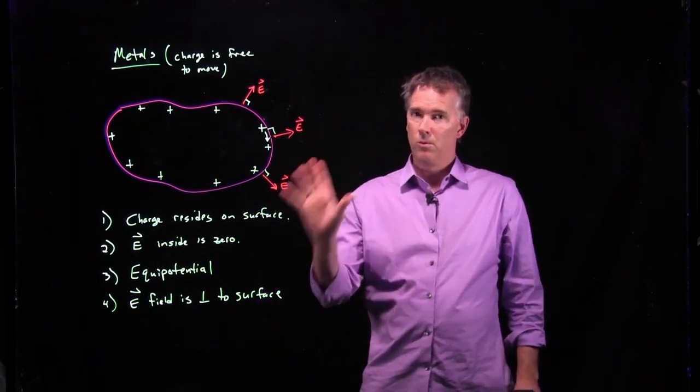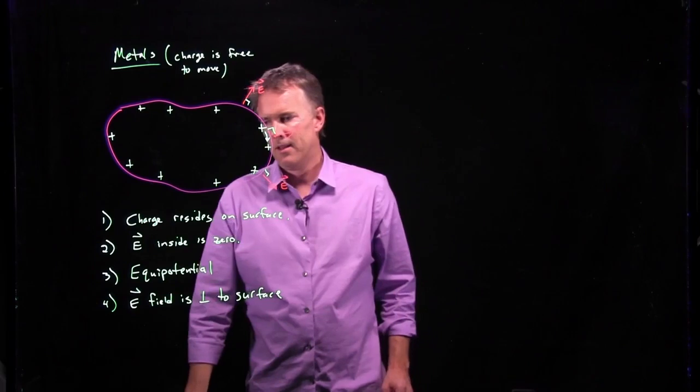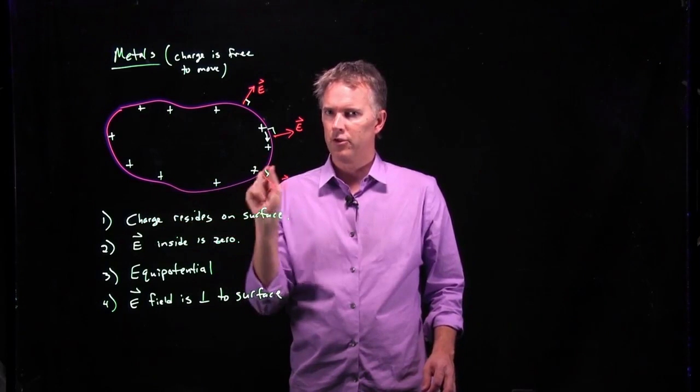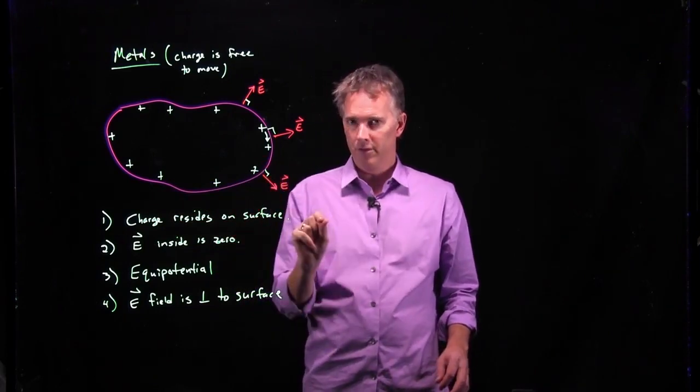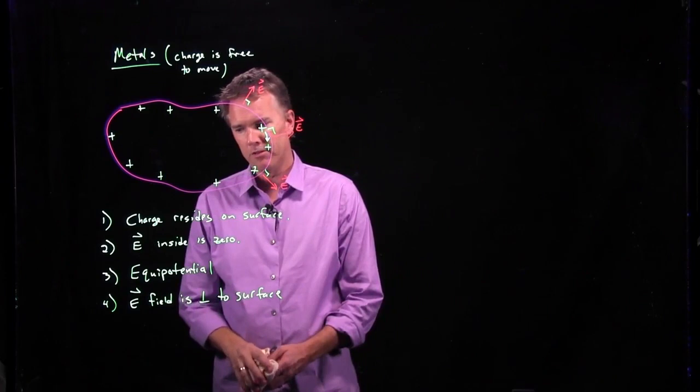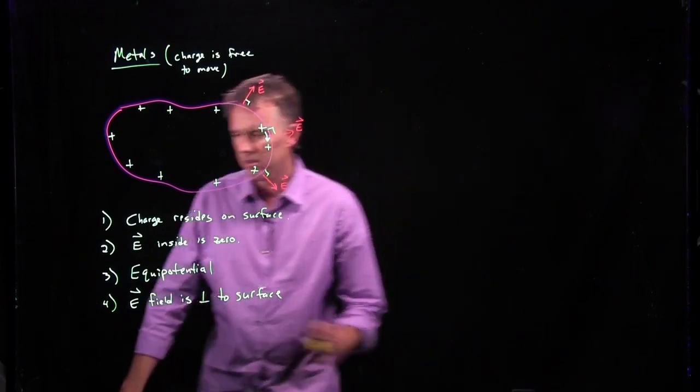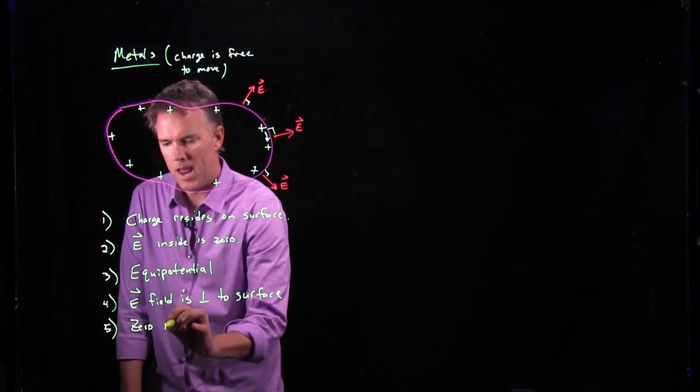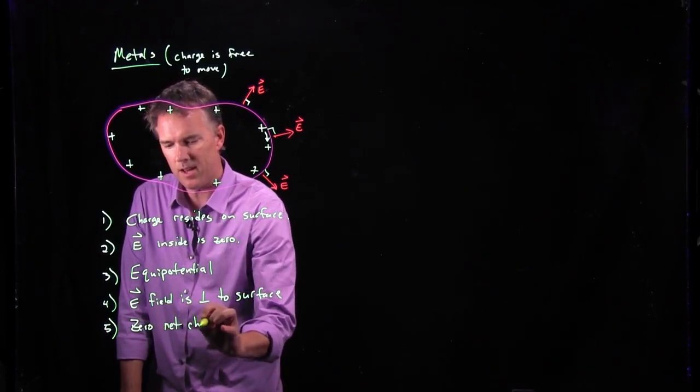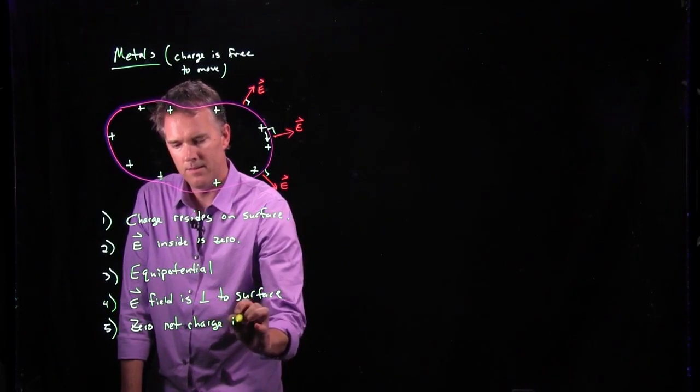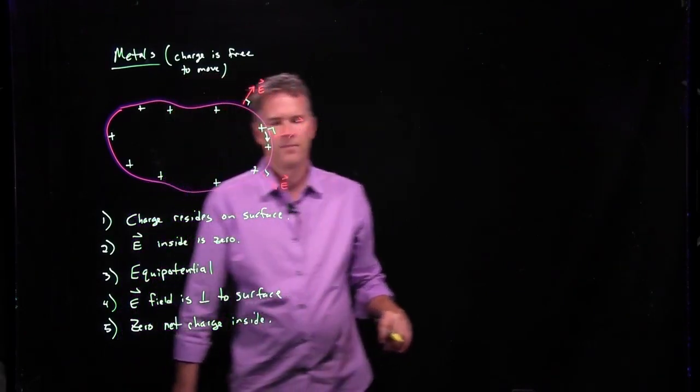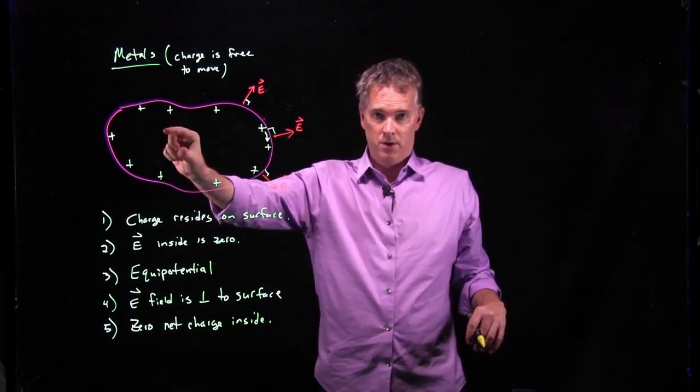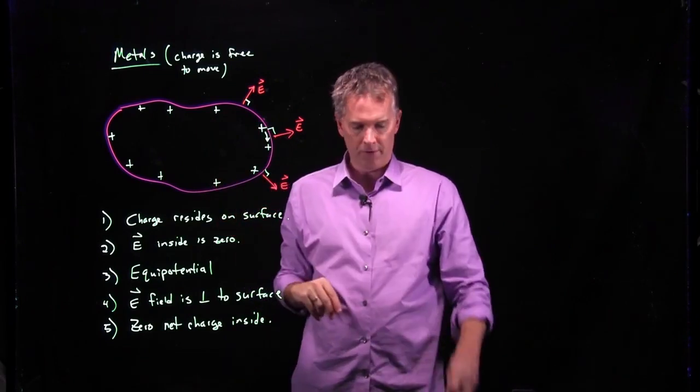All right. There's one more that we can get, which is sort of obvious from charge from the number one, which says the charge resides on the surface. If the charge resides on the surface, that means that there is zero net charge inside. Okay? In this region here, there is no charge. If there was charge, it would migrate out to the surface.